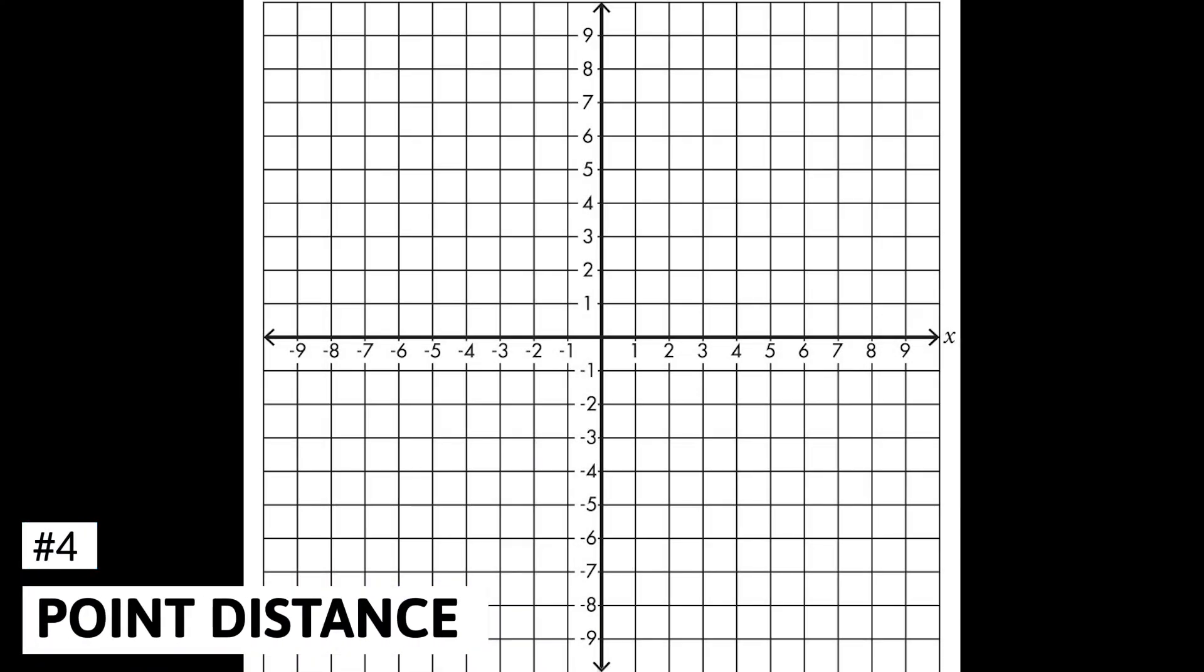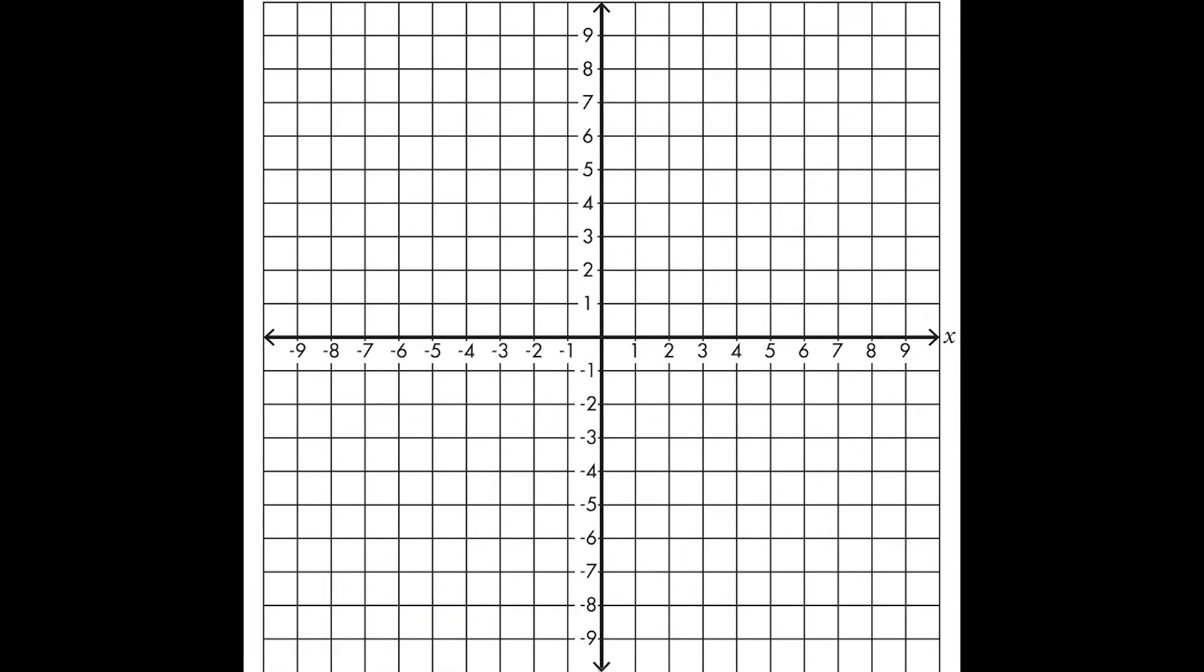Number 4, distance between points. The distance between points formula for coordinate geometry is the distance equals the square root of x1 minus x2 squared plus y1 minus y2 squared. x1 represents the x-coordinate of the first point, and x2 represents the x-coordinate of the second point, and so on.